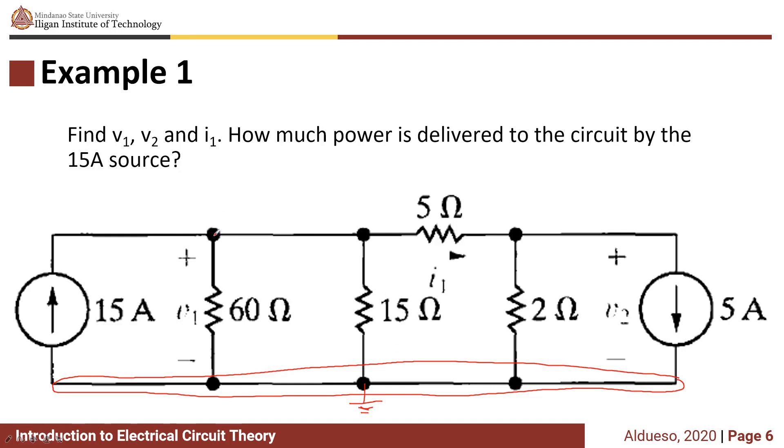And then we assign node voltages. So this node right here is a common node, we have V1, and this node right here is V2.